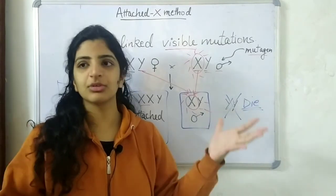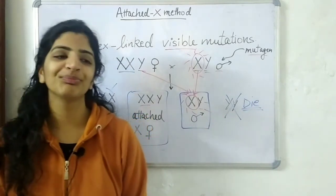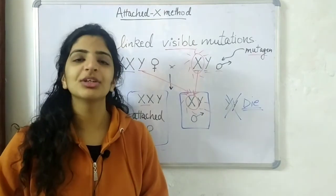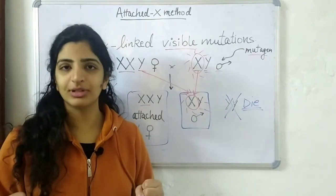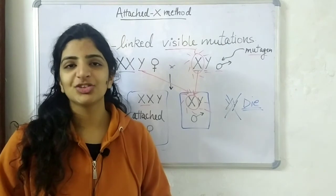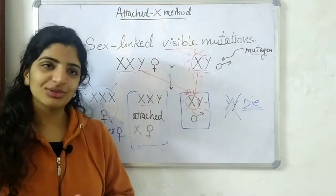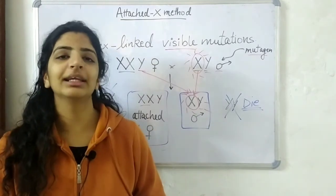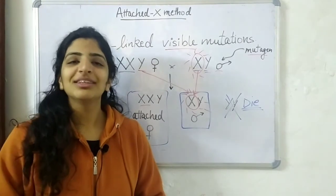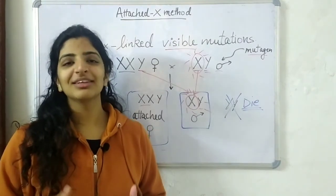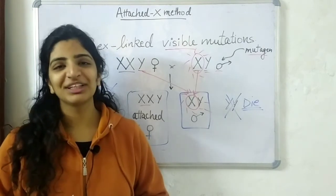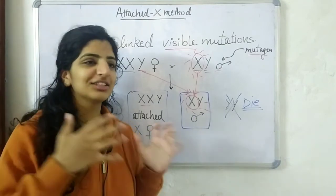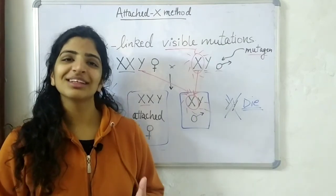This method is an instant method since it gives the conclusion in just one cross. In contrast, the CLB method required two crosses and analysis of which organisms lived or died to determine if the mutagen induced a lethal mutation. If you haven't seen the CLB method, I suggest you go ahead and watch it as it is one of the most important methods in mutation detection. I hope you understood this attached X method and why and where exactly we use it. If you liked this video, don't forget to press like, subscribe for regular updates, and share it with your friends.